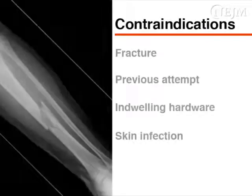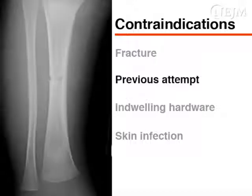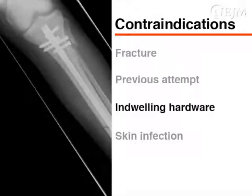Intraosseous access should not be attempted in any bone with a suspected or known fracture, or proximal to a site, or in a bone in which a previous attempt was unsuccessful. Indwelling hardware from a previous orthopedic procedure may prevent successful cannulation in that bone.